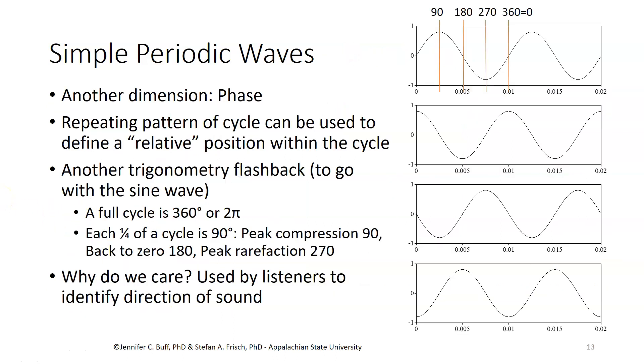There is another measurable dimension to simple periodic waves called phase. When we have a repeating pattern in a cycle, we have landmarks like compression and returning back to atmospheric pressure and rarefaction. If we have two waves with the same frequency, the alignment between those peaks of compression and troughs of rarefaction defines a relative position, which we refer to as phase. You may remember from trigonometry, a full cycle is 360 degrees or 2 pi in radians. Each quarter of a cycle is 90 degrees. In the upper right I have marked peak compression at 90, back to zero at 180, peak rarefaction at 270, and then back to zero again at 360, which is also our starting point.